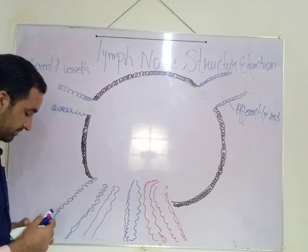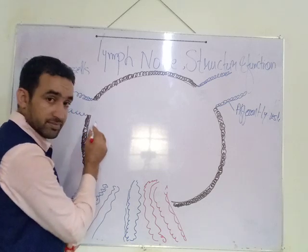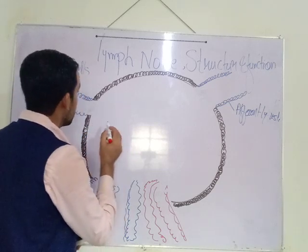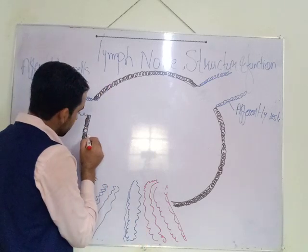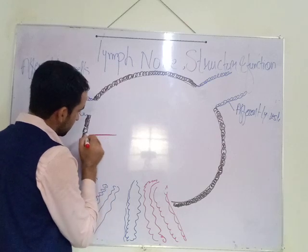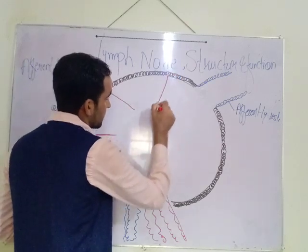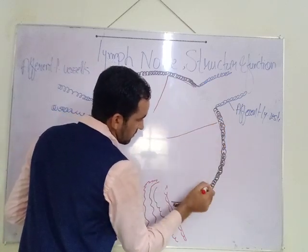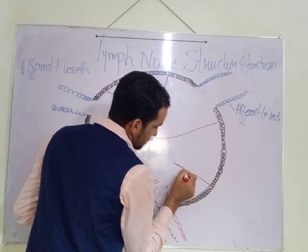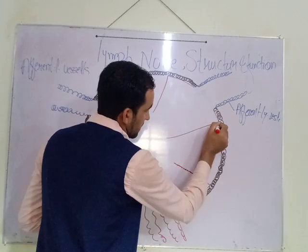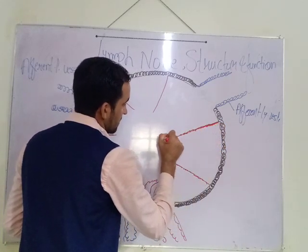There is a partition inside the lymph node. Let me draw the partition, which is made of connective tissue fibers. This partition is made of connective tissue and it is called the septa of the lymph node.